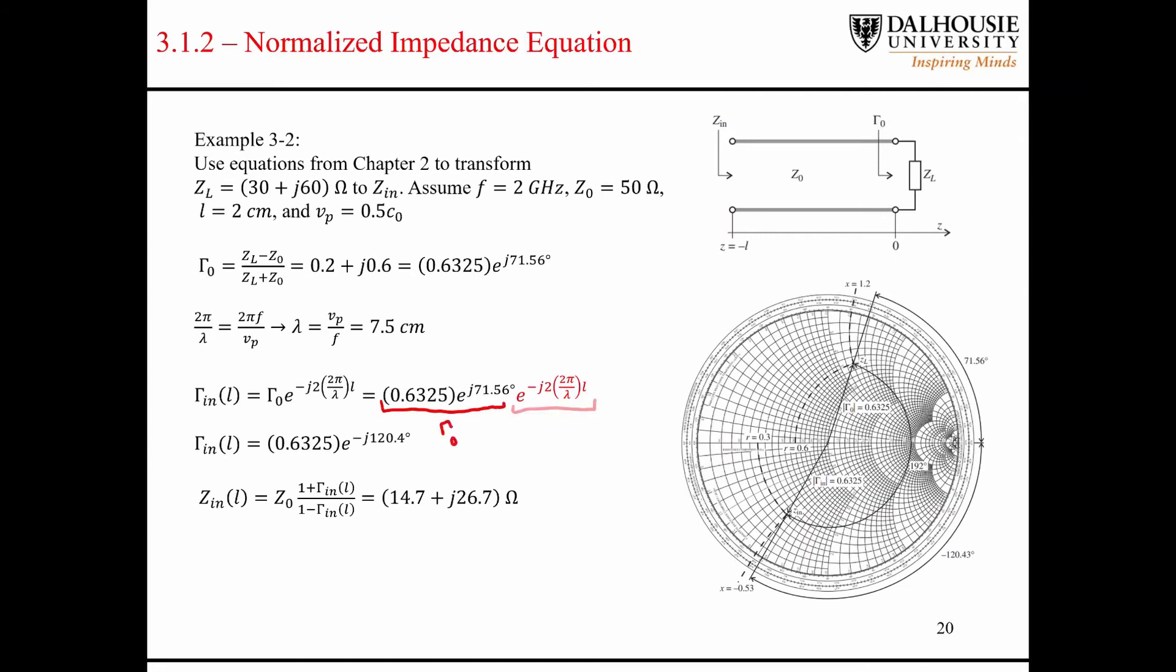And then this quantity here, the 2 pi, the 2 pi over the wavelength times the distance, this is referred to as the electrical length.